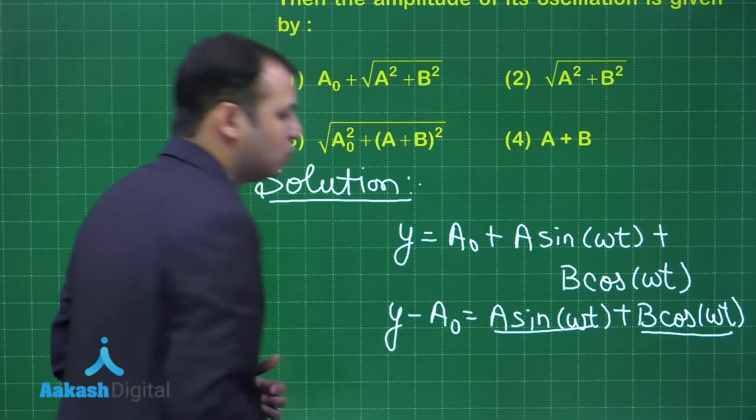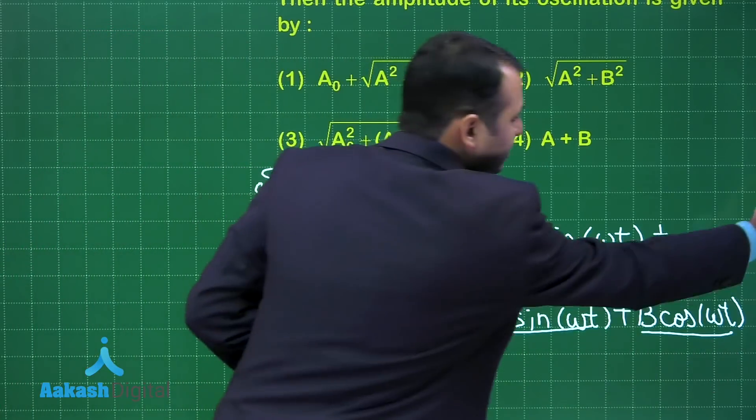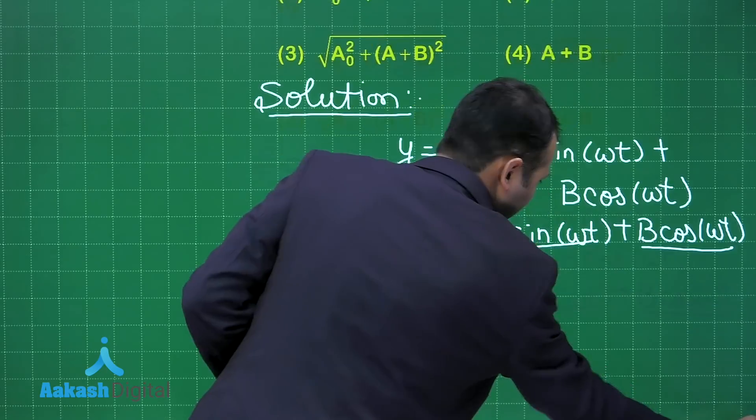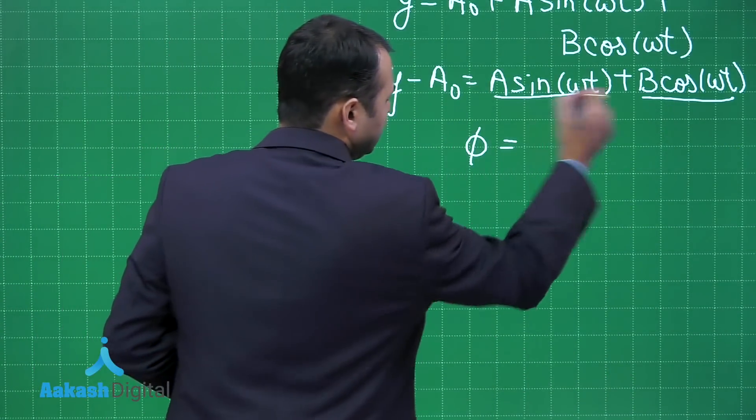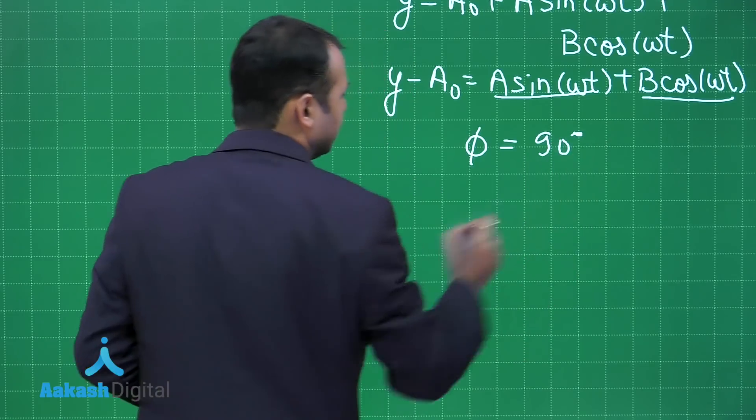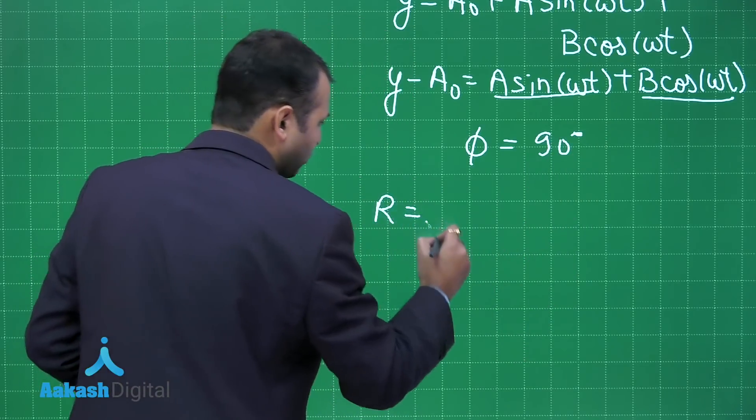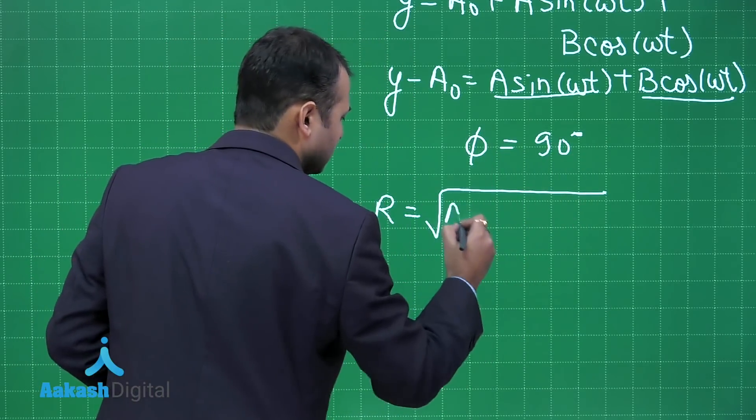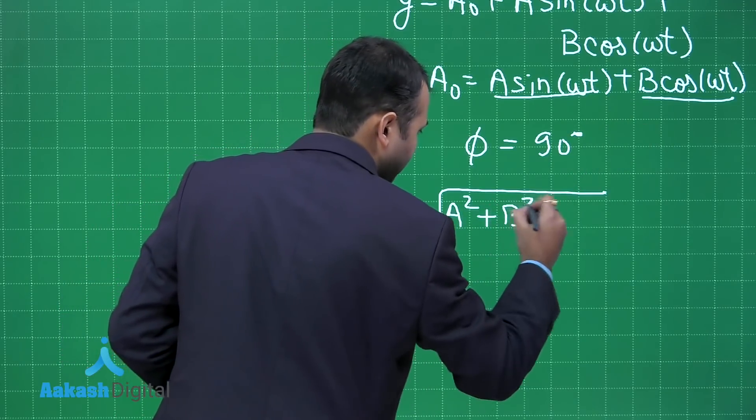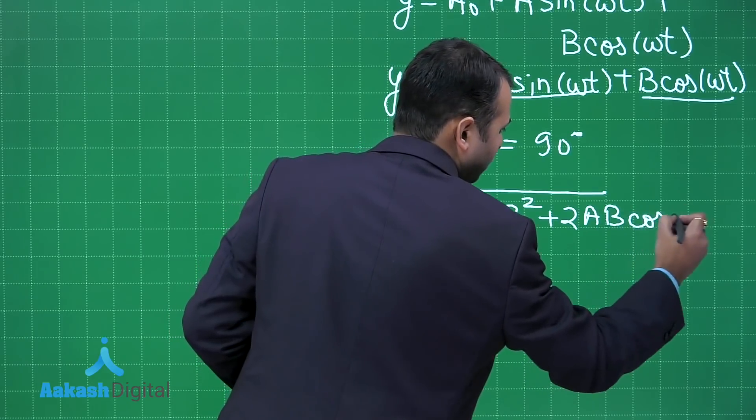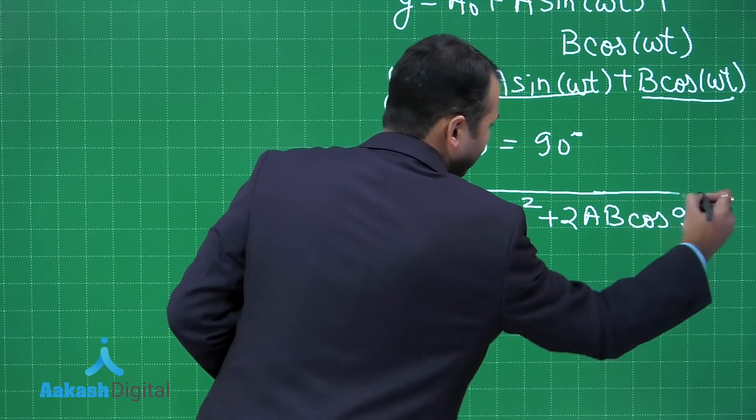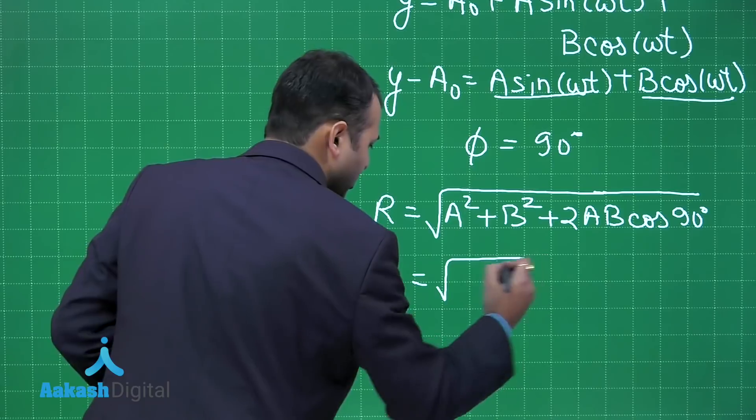So between these two waves, what is the phase difference? Definitely, phi between these two components would be 90 degrees. So the resultant amplitude would be under root of A² plus B² plus 2AB cos(90°).